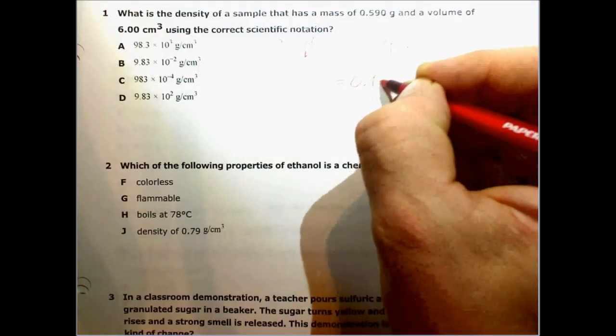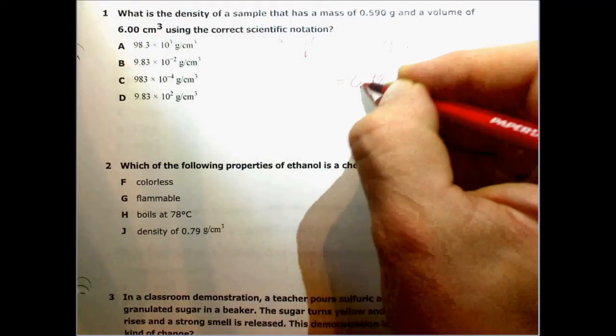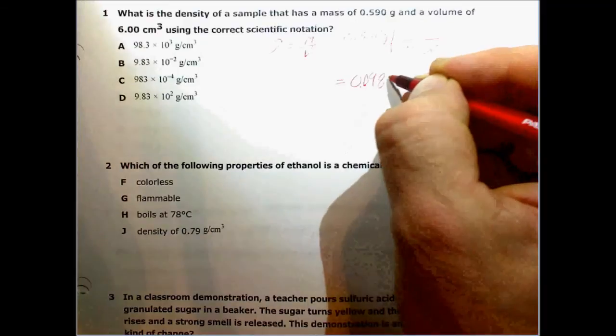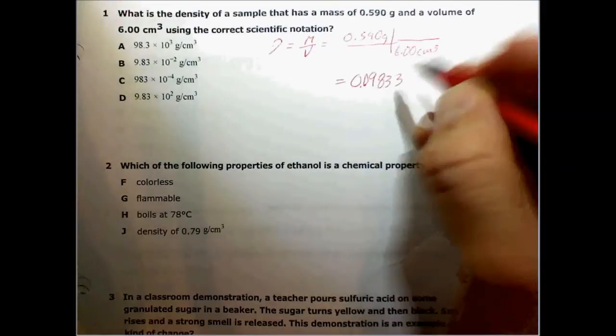0.590 divided by 6 gives us a number that looks like 0.09833 and so on on our calculator.